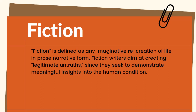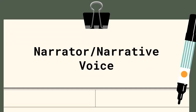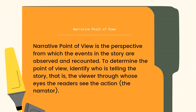What are the different elements of fiction? The first element is the narrator or the narrative voice, also known as the point of view — the perspective from which the story is being told. Narrative point of view is the perspective from which events in the story are observed or recounted. To determine the point of view, we identify who is telling the story — through whose eyes the reader sees the action, also known as the narrator.